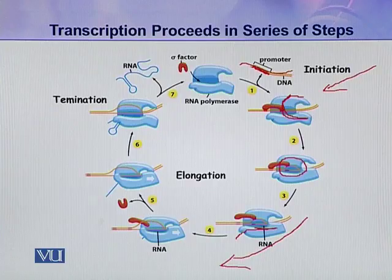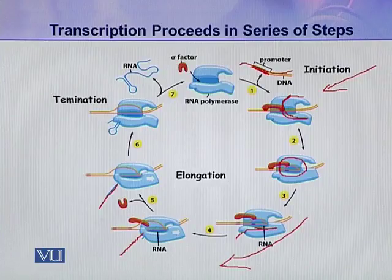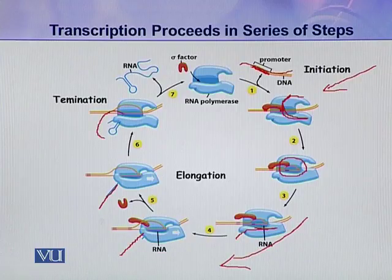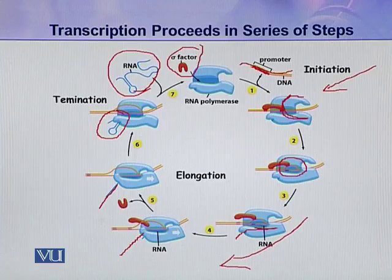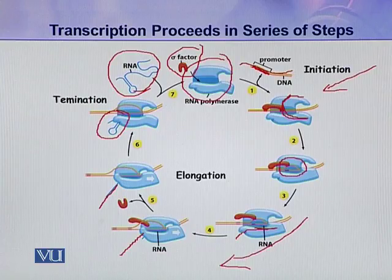Then it goes to the elongation phase — here you can see the synthesis of the new RNA strand and the elongation of the RNA molecule. When the gene is fully transcribed, in the termination phase, this newly synthesized RNA is released, the sigma factor is released from the polymerase, and the RNA polymerase itself is also released from the DNA strand.